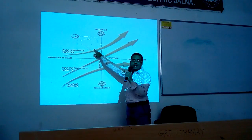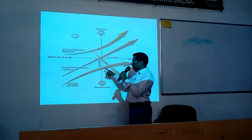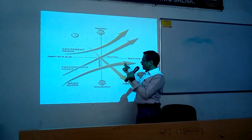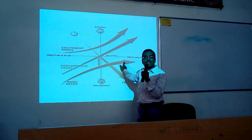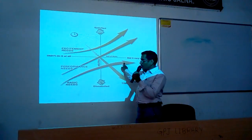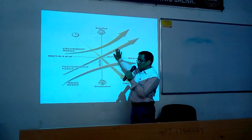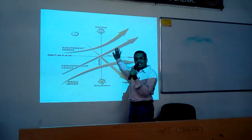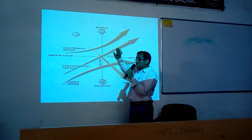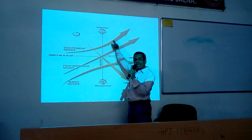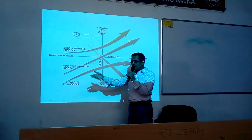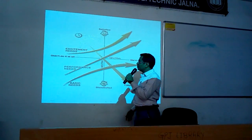The customer wants excitement grids. If basic needs are satisfied, it is okay. If performance needs are satisfied, the customer is happy. But the customer is delighted if the excitement grids are satisfied.